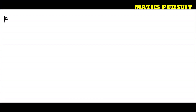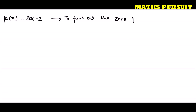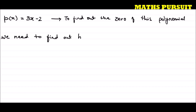The question has given us this polynomial: p(x) is equal to 3x minus 2, and it is asking us to find out the zero of this polynomial. So what does it mean by finding out the zero of this polynomial? That means we need to find out when p(x) will be zero.